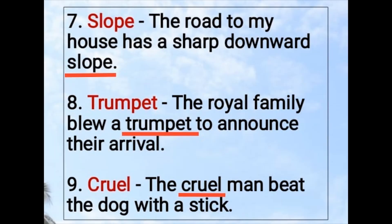Number 7. Slope: The road to my house has a sharp downward slope. Number 8. Trumpet: The royal family blew a trumpet to announce their arrival.